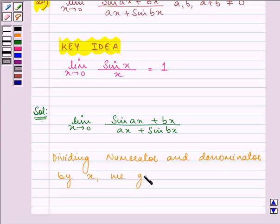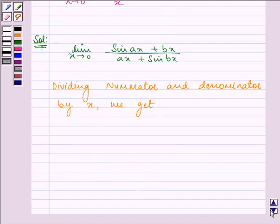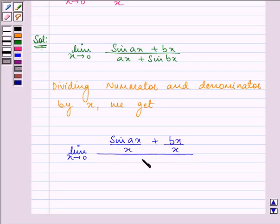we get limit x approaches 0: sin ax upon x plus bx upon x, the whole divided by ax upon x plus sin bx upon x.